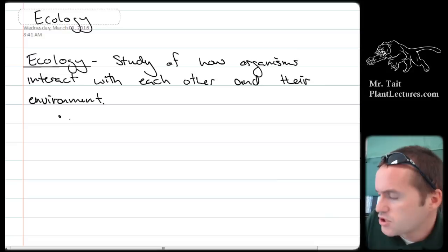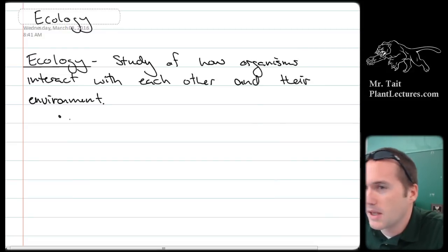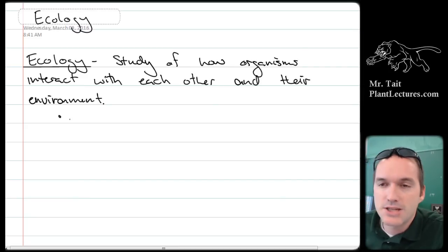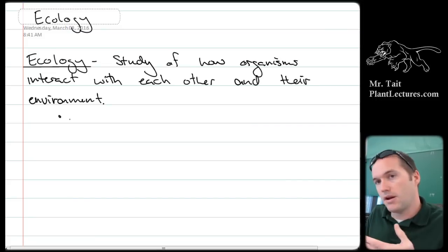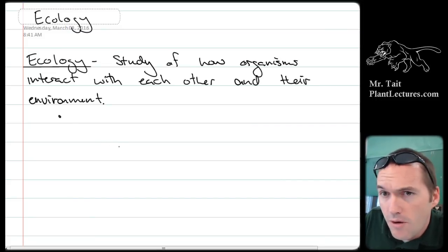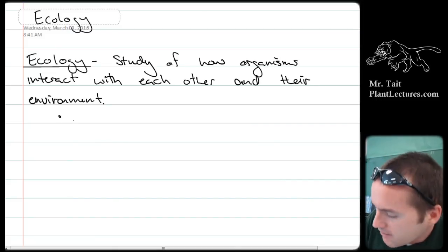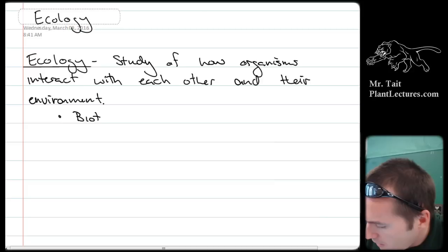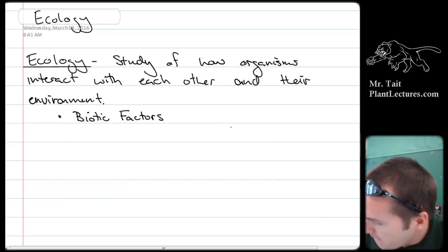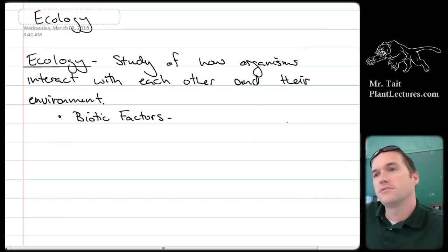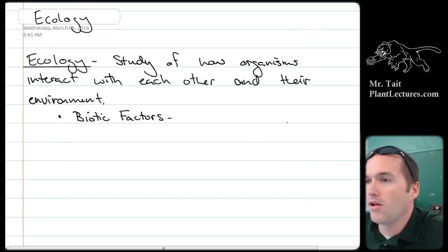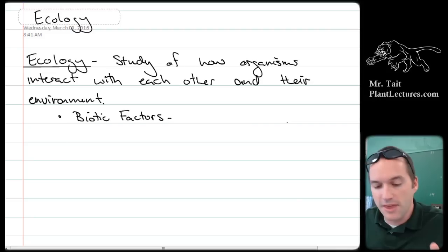When we're looking at ecology, the main distinction we're going to make is whether things are living or non-living. If they're living, we refer to them as biotic factors. Biotic factors are all of the living things that an organism is going to interact with.